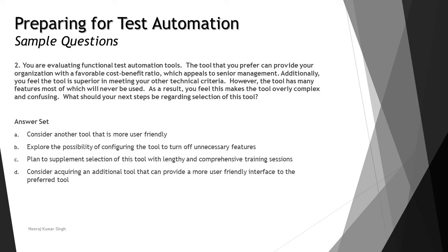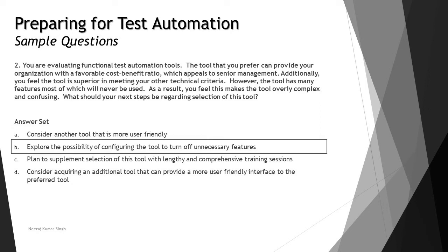Option C — plan to supplement the selection with lengthy and comprehensive training sessions — is not a good idea because you're looking to not increase costs further, rather to reduce them. Option D — consider requiring an additional tool to provide a more user-friendly interface — means having one tool on top of another, which is not preferable. The right answer here is B.